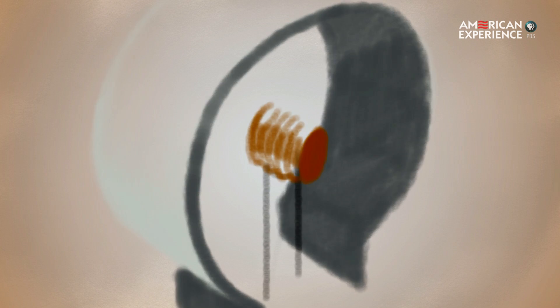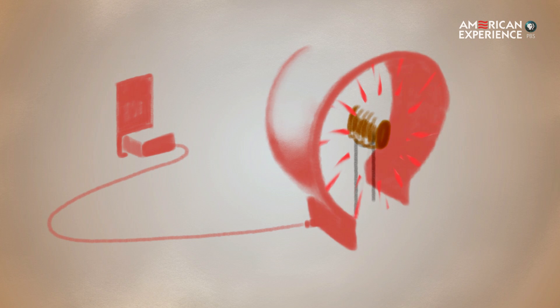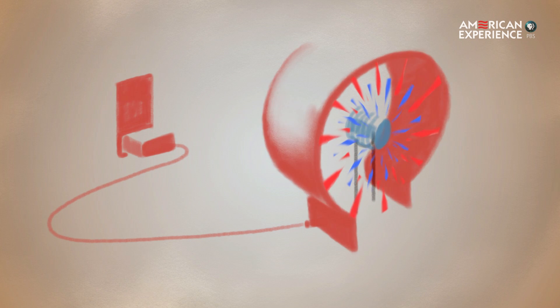He sent an electric current through the outer ring, turning the outer ring and the cylinder into magnets. The interaction of the two magnets made the inner cylinder spin without any parts touching.